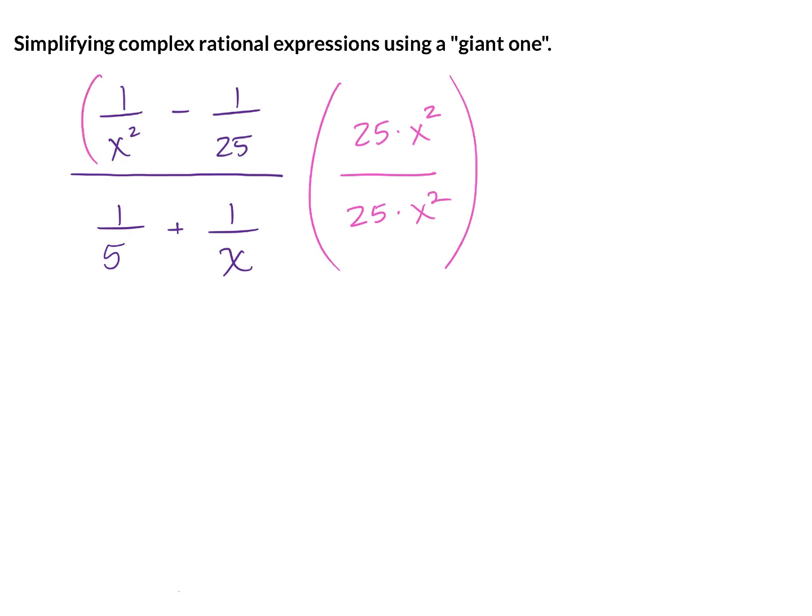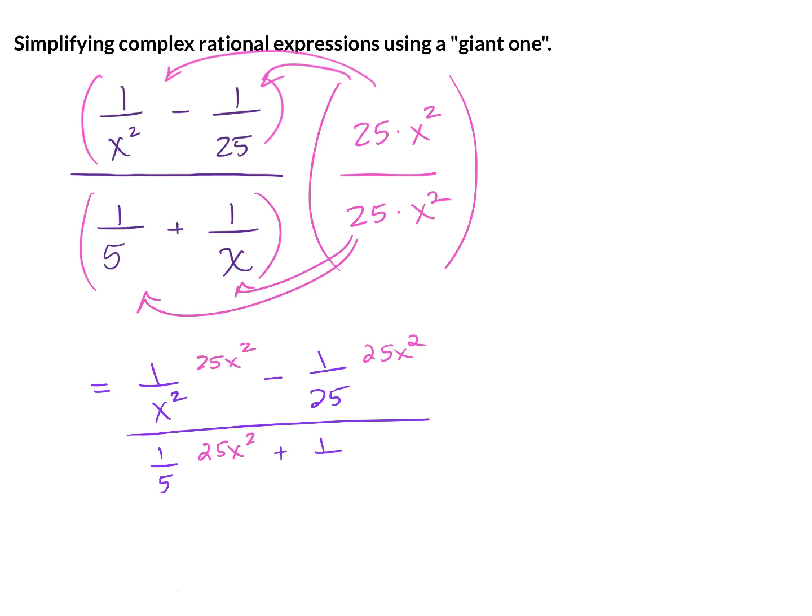You're going to multiply that throughout the numerator and the denominator. So we're going to distribute this 25x squared to each term in the numerator and the denominator. So for our numerator, we have 1 over x squared times 25x squared minus 1 over 25 times 25x squared. And in the denominator, we have 1 over 5 times 25x squared plus 1 over x times 25x squared.